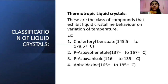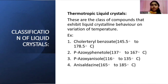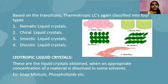Coming under classification of liquid crystals, we have thermotropic liquid crystals. These are the class of compounds that exhibit liquid crystalline behavior on variation of temperature. Examples are the same as those of the liquid crystals. Based on the transitions, thermotropic liquid crystals are again classified into four types: Nematic, Chiral, Smectic, and Discotic.